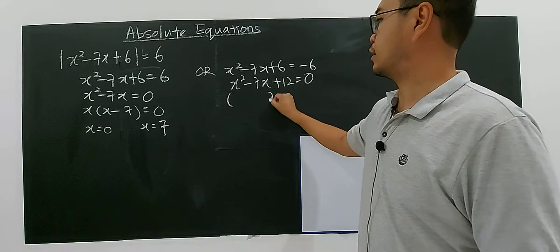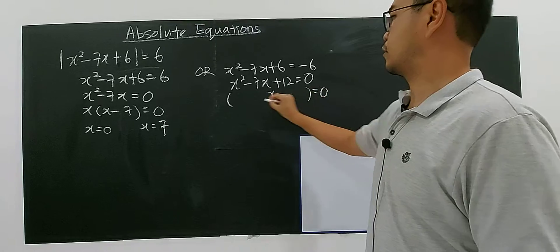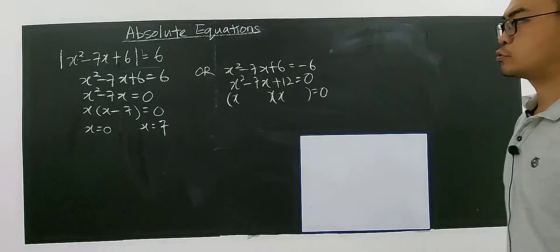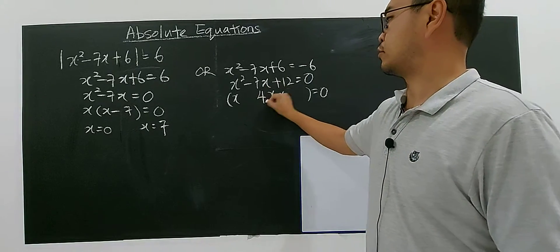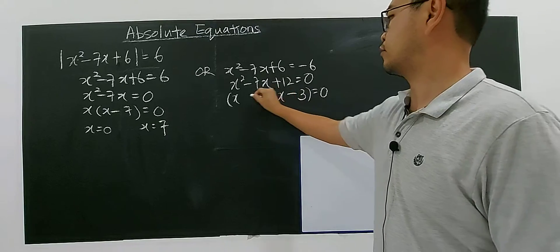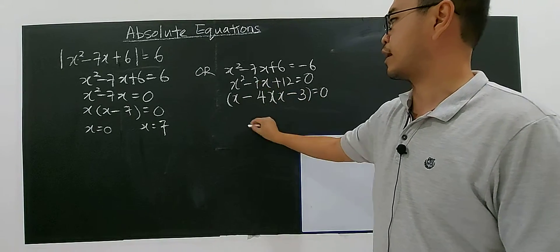Then you factorize and you have (x - 4)(x - 3) = 0. How you get 12? It must be 4 and 3 because 4 times 3 gives you 12, and negative 4 plus negative 3 gives you negative 7.